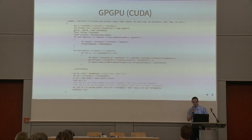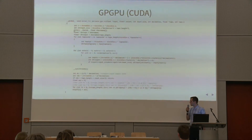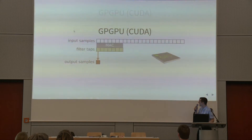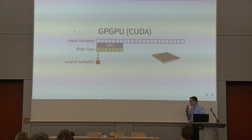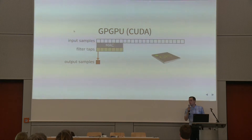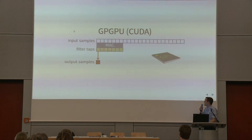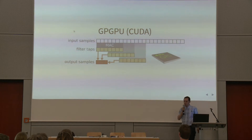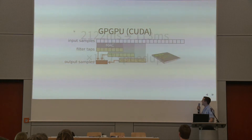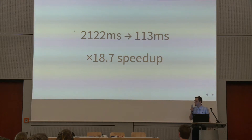I also made a GPGPU implementation. Here you can see an OpenCL kernel running on an NVIDIA card. A GPU is similar to a CPU with many cores, but all the cores share a lot of memory bandwidth. GPU can do many operations at the same time, and we can get an 18 times speedup with this approach.